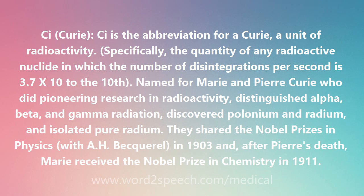Named for Marie and Pierre Curie, who did pioneering research in radioactivity, distinguished alpha, beta, and gamma radiation, discovered polonium and radium, and isolated pure radium. They shared the Nobel Prize in Physics with A.H. Becquerel in 1903, and after Pierre's death, Marie received the Nobel Prize in Chemistry in 1911.